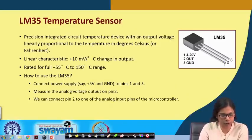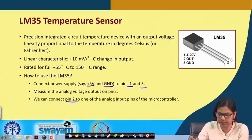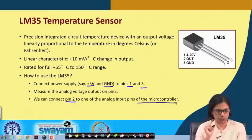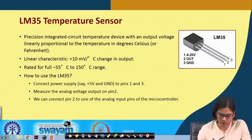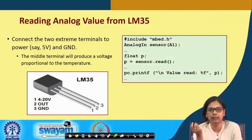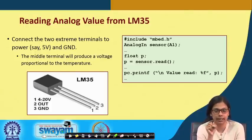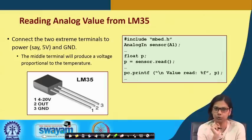Now, how do we use it? First we need to connect plus 5 volt to pin 1 and ground to pin 3, and we can connect pin 2 — the middle one — to one of the analog pins of the microcontroller. How do we read the analog value? Till now we have seen how to output or input digital values. Now we will see how we can read an analog value. We need to connect LM35 to ground and VCC, and the middle terminal will produce a voltage proportional to the temperature.